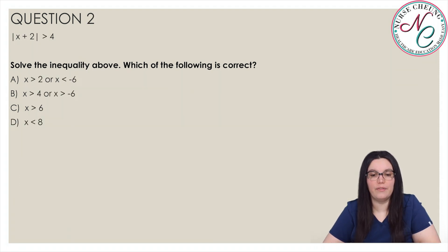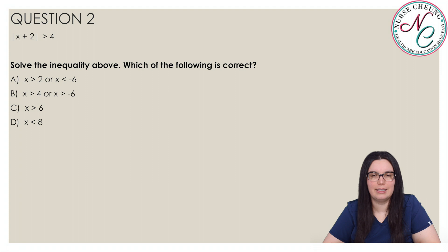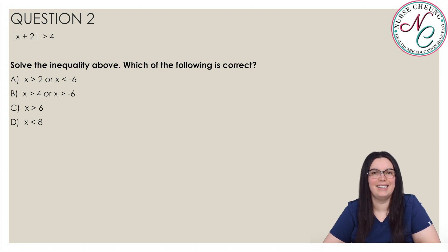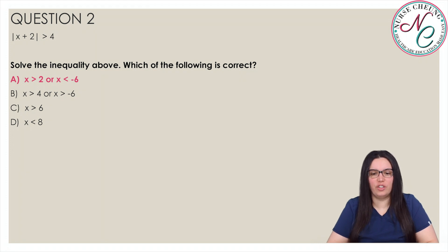The absolute value of x plus 2 is greater than 4. Solve the inequality above — which of the following is correct? Is it A, x is greater than 2 or x is less than negative 6; B, x is greater than 4 or x is greater than negative 6; C, x is greater than 6; or D, x is less than 8. The correct answer is A, x is greater than 2 or x is less than negative 6.